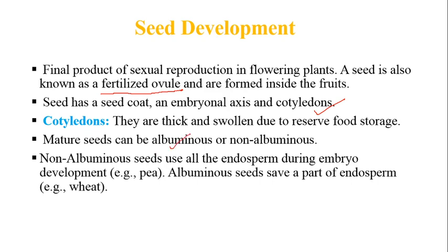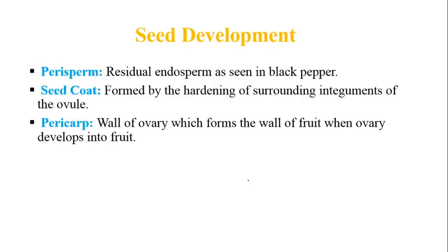Mature seeds can be albuminous or non-albuminous. Non-albuminous seeds have no endosperm remaining — they have used up all their endosperm, as in pea and groundnut. In albuminous seeds, a part of the endosperm is still present, as in wheat, maize, and rice.